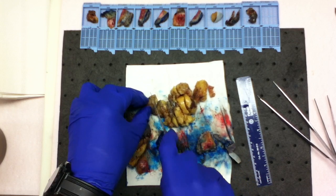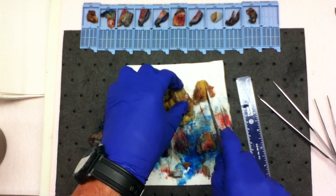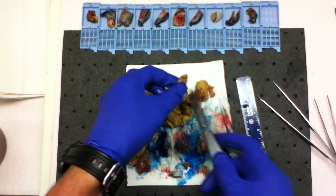Sectioning through the spermatic cord lipoma reveals a tan yellow unremarkable fatty cut surface. No areas of hemorrhage or necrosis are identified.